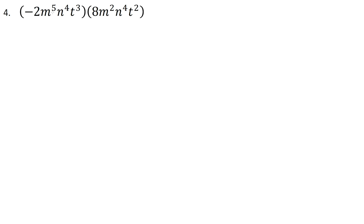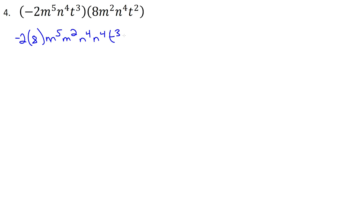Question 4 — again two monomials, although we're starting to see three kinds of variables. The idea is still the same. So -2 times 8, then m⁵ times m², n⁴ times n⁴, t³ times t². That gives -16, m to the 7th (5 + 2), n to the 8th (4 + 4), and t to the 5th (3 + 2).